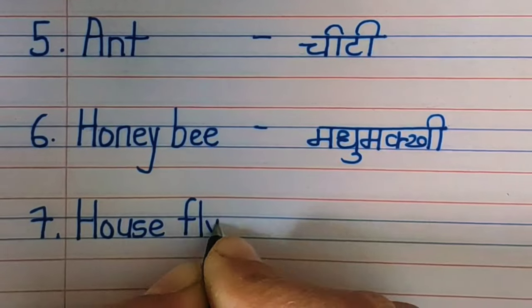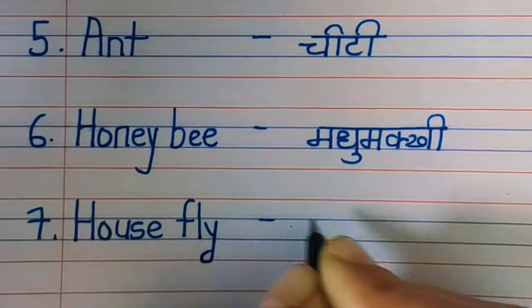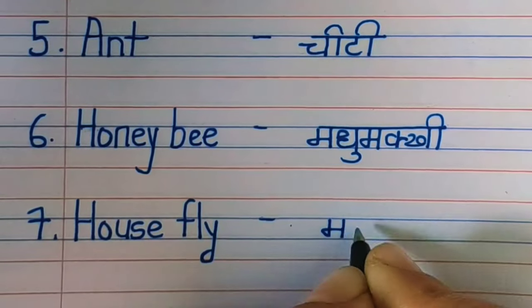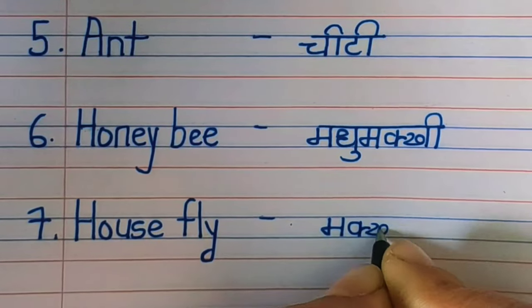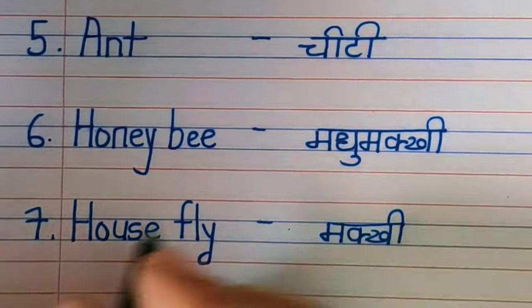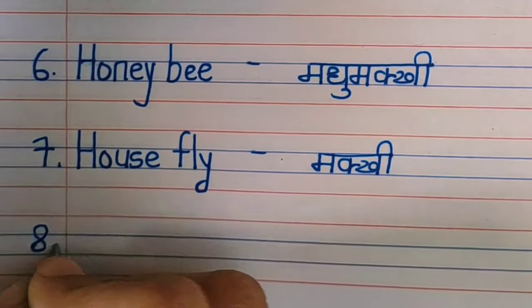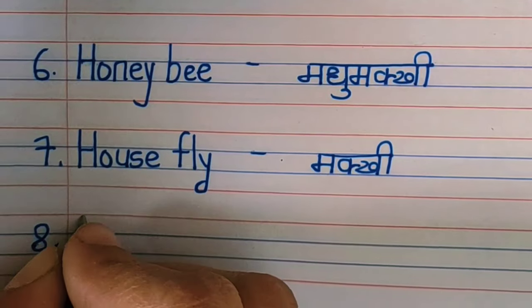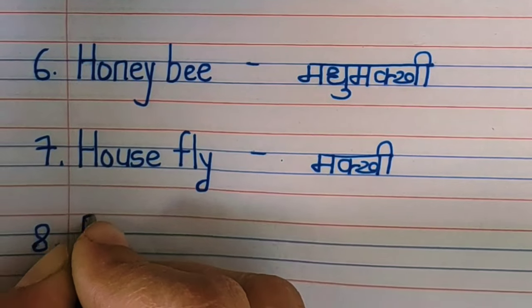Honeybee means madhumakhi. Seven: housefly, H O U S E F L Y. Housefly means makhi.